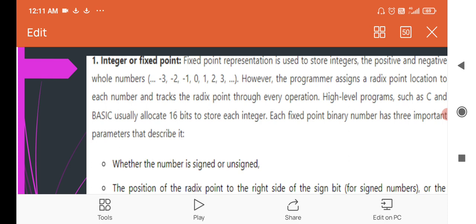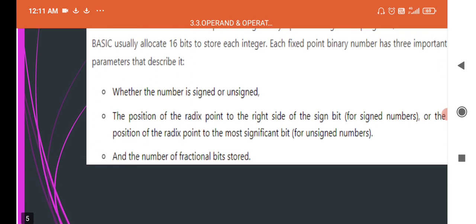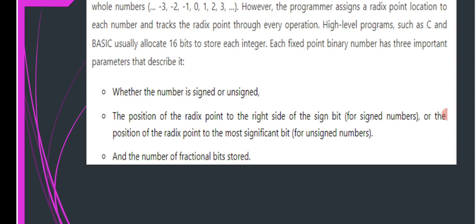Each fixed-point binary number has three important parameters that describe it: whether the number is signed or unsigned, the position of the radix point to the right side of the sign bit for signed numbers or to the most significant bit for unsigned numbers, and the number of fractional bits stored.